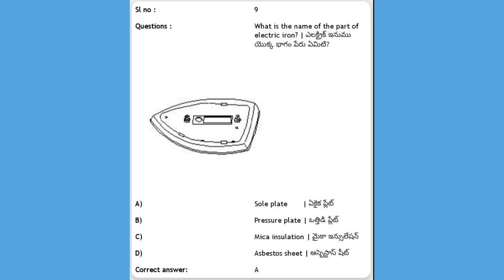Next, what is the name of the part of an electric iron shown in the diagram? Options: A) sole plate, B) pressure plate, C) mica insulation, D) asbestos sheet. The answer is sole plate.